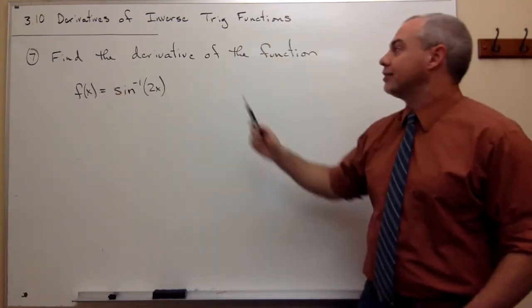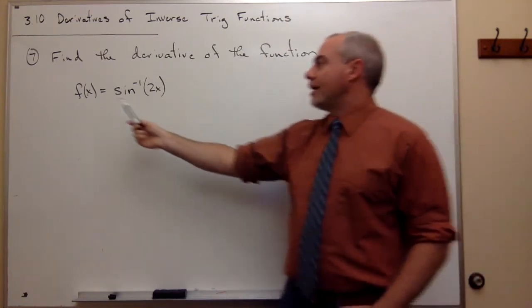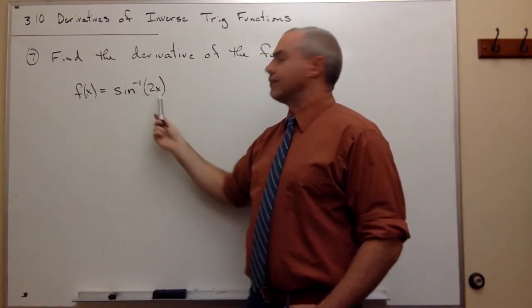Number seven asks us to find the derivative of the function f(x) = sin⁻¹(2x).